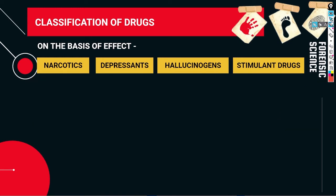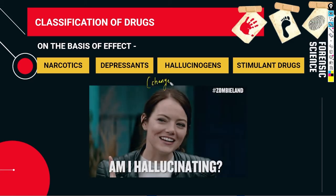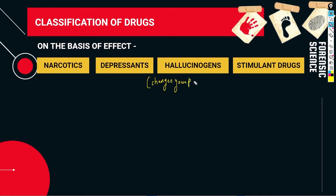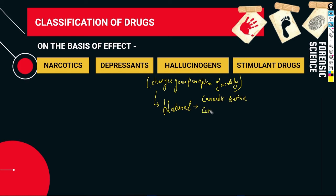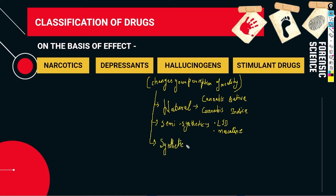Third are hallucinogens. Hallucinogens change your perception of reality — for example, you are in your house but you feel like you are in Goa enjoying yourself. We divide hallucinogens into three types: natural hallucinogens include Cannabis sativa and Cannabis indica; semi-synthetic include LSD and mescaline; and synthetic include PCP (phenylcyclohexylpiperidine), also called angel dust, and MDMA.